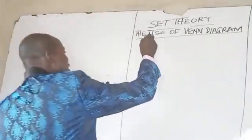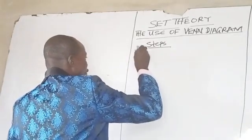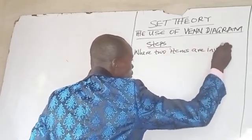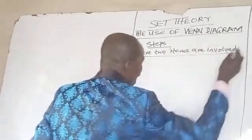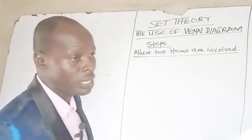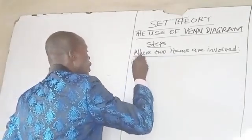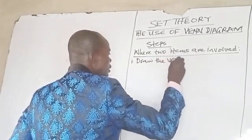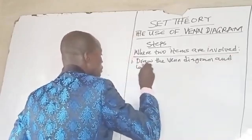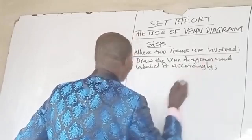What are the steps for solving set theory where two items are involved? Let's say the items involved are A and B. Step one: draw the Venn diagram and label it accordingly.